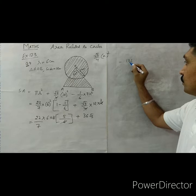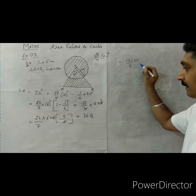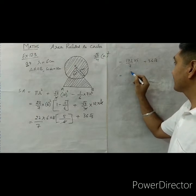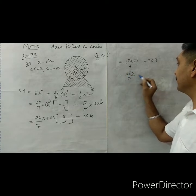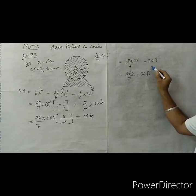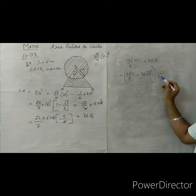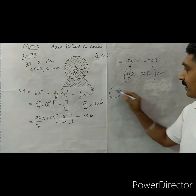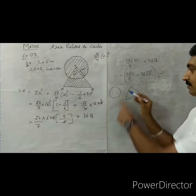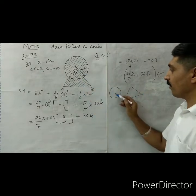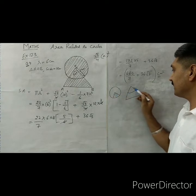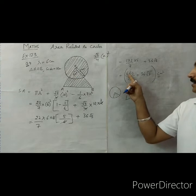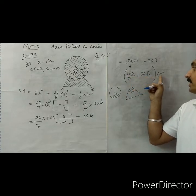So the shaded area is (132/7) × 5 + 36√3 = 660/7 + 36√3 centimeter square. The concept here is: we have one circle and one triangle overlapping. We subtract one sector area which is counted twice when adding the two areas.